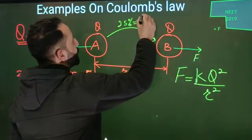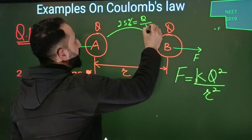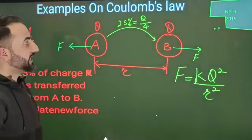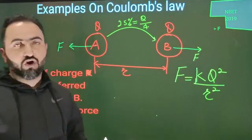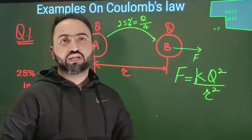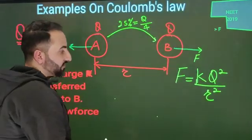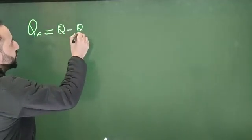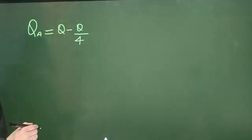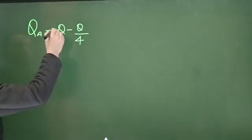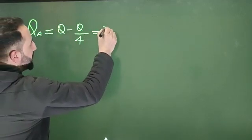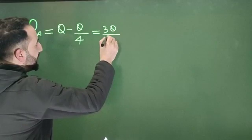That means Q/4 charge is subtracted from A and then added to B. Now we are supposed to calculate the new force between particle A and particle B. What is the charge of A? Initially it's Q. Now Q/4 is subtracted from it, so the charge becomes Q - Q/4. By cross multiplication, 4/4 minus 1/4 is 3/4, so it equals 3Q/4. The charge of A becomes 3Q/4.